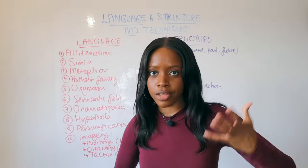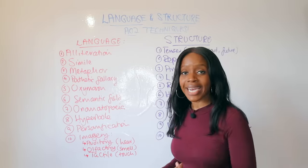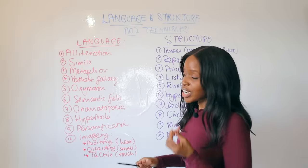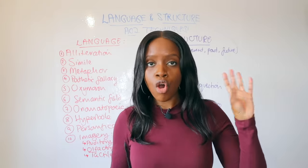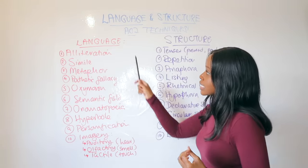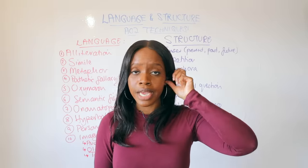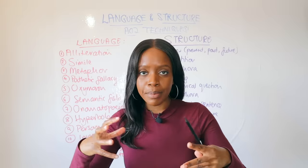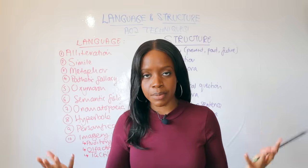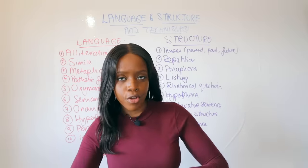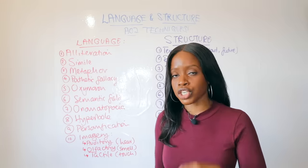The fourth technique is pathetic fallacy — when the weather is mentioned, such as sunshine or rain, and it usually reflects the atmosphere or mood. The fifth language technique is oxymoron, a specific type of juxtaposition where two opposite things are shown together — hot and cold, up and down, and so on. The sixth technique is semantic field, which simply means category — two or more words belonging to the same category, for example roses, daffodils, and tulips belong to the semantic field of flowers, while iPhone, laptop, and mobile phone belong to the semantic field of technology.